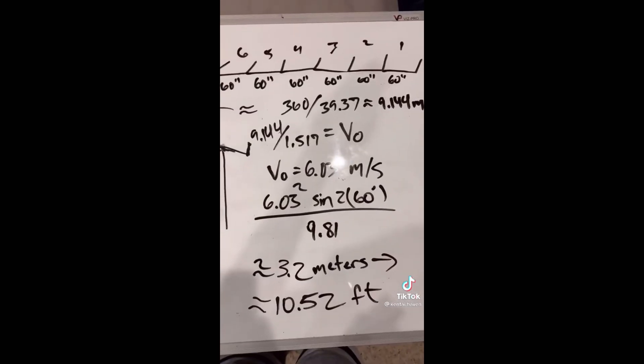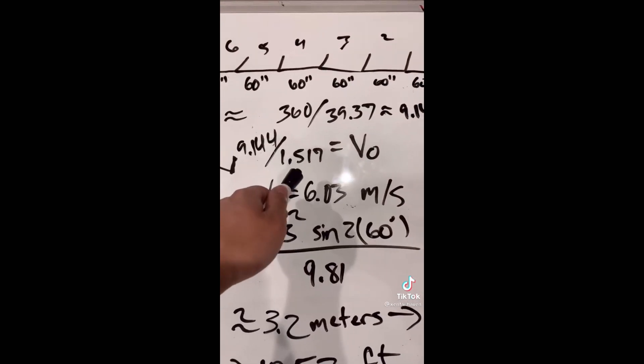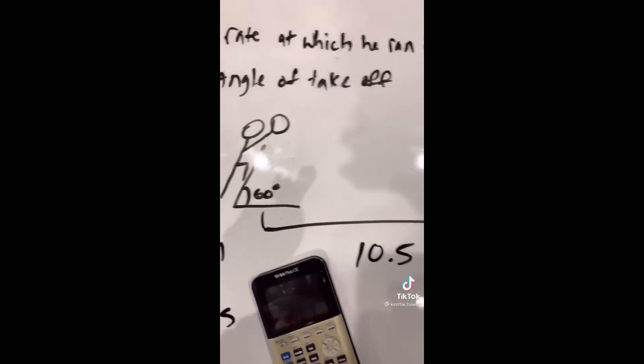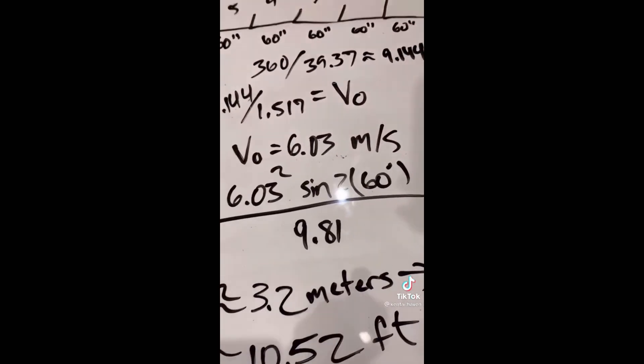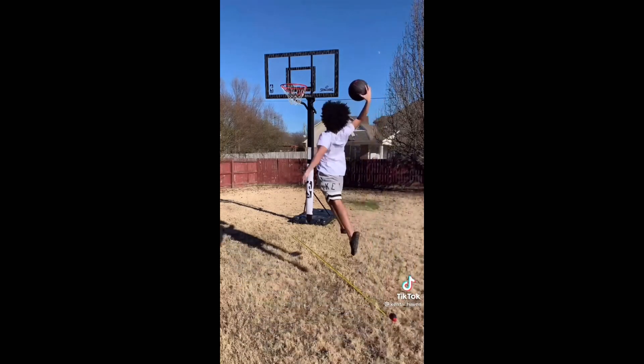I decided to calculate the distance of this dunk by using a sidewalk. I'm using a frame from this video where the breaks in the sidewalk are more apparent. And I measured my own sidewalk in which the length was 60 inches, and I'm assuming that these values are similar and constant, even though there are some inconsistencies. I'm estimating him to have passed about 6 slabs with a takeoff time of 1 in 517,000 seconds. Next, I needed the angle of the takeoff, and I'm estimating that value to be about 60 degrees. Now we have enough data to solve with this formula. We need the distance: multiply the length of the sidewalk by 6 and divide by 39.37 to convert to meters. Next, divide that number by the time of the takeoff to find the initial velocity of 6.03 meters per second. Input 60 degrees for theta, and divide by the acceleration of gravity to be left with about 3.2 meters, or about 10.52 feet.